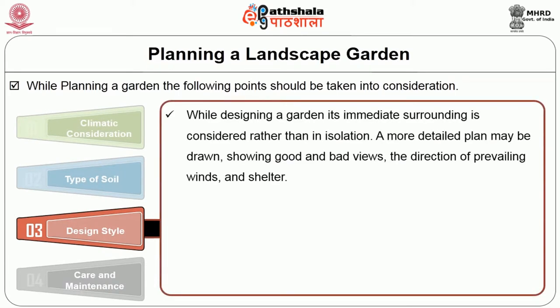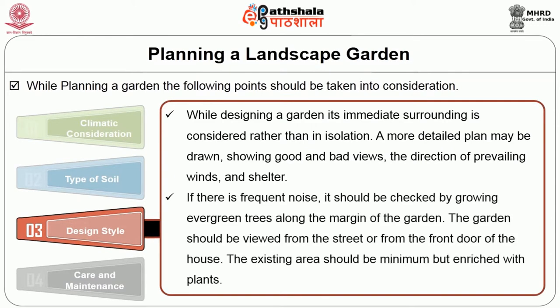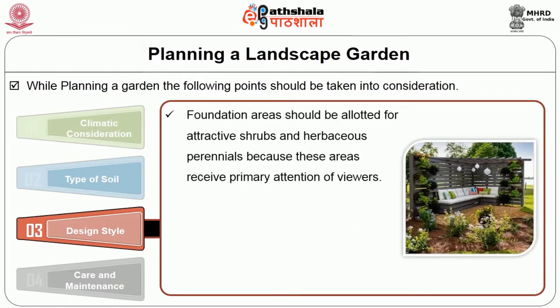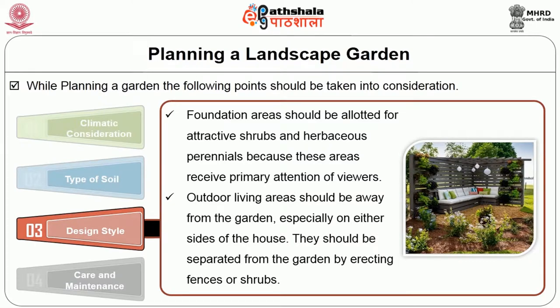While designing a garden, its immediate surroundings are considered rather than in isolation. A more detailed plan may be drawn showing good and bad views, the direction of prevailing winds and shelter. If there is frequent noise, it should be checked by growing evergreen trees along the margin of the garden. The garden should be viewed from the street or from the front door of the house. The existing area should be minimum but enriched with plants. Foundation areas should be planted with attractive shrubs and herbaceous perennials because these receive the primary attention of viewers. Outdoor living areas should be away from the garden, especially on either side of the house, separated by erecting fences or shrubs.